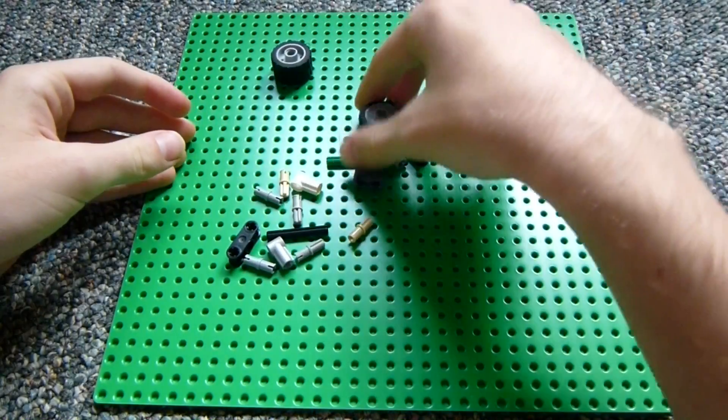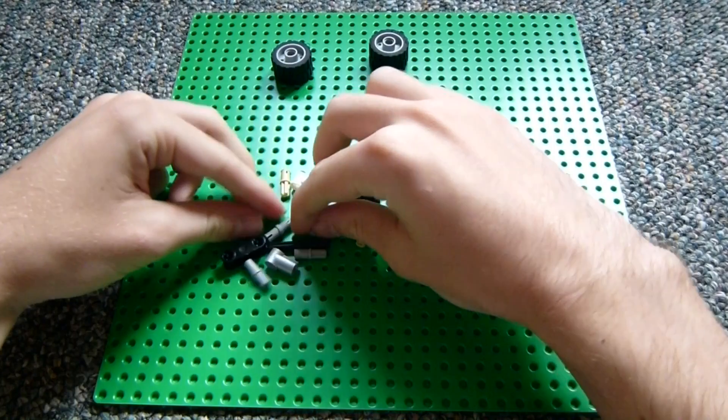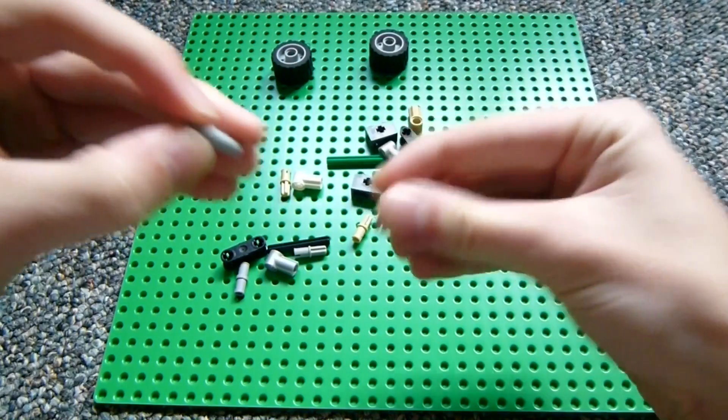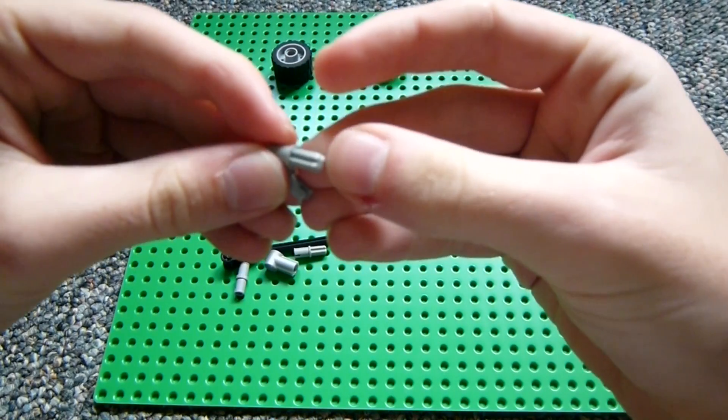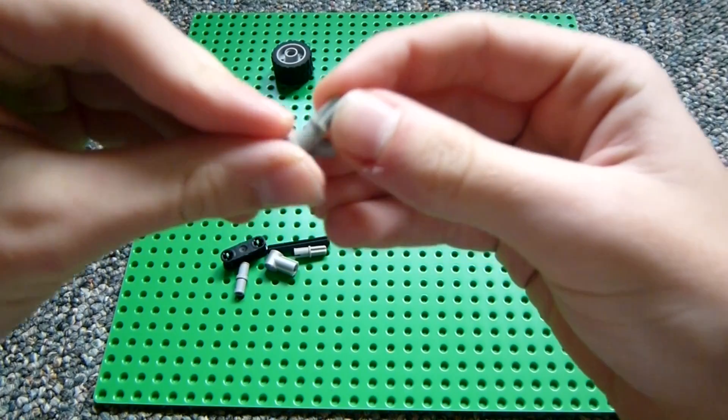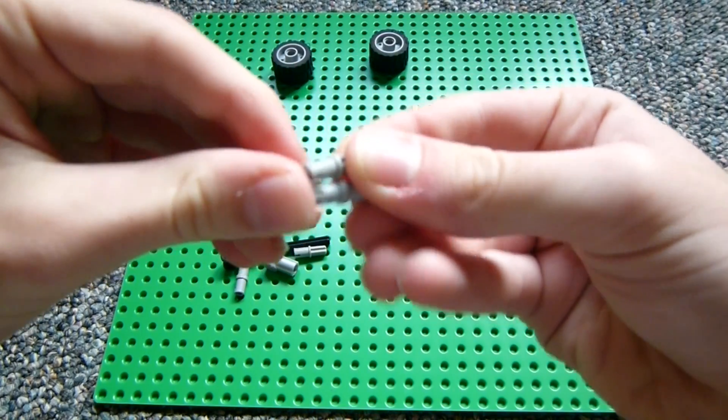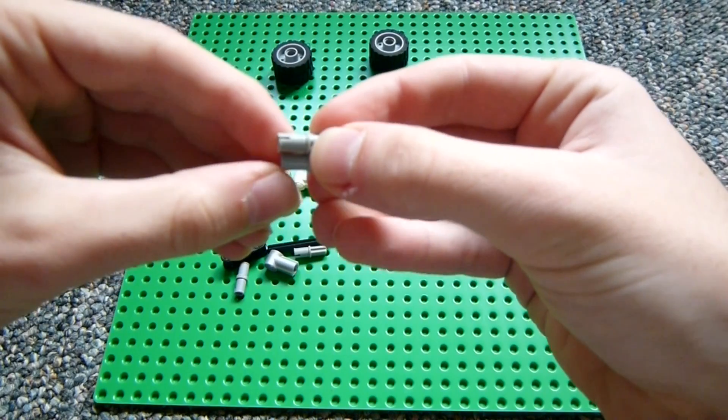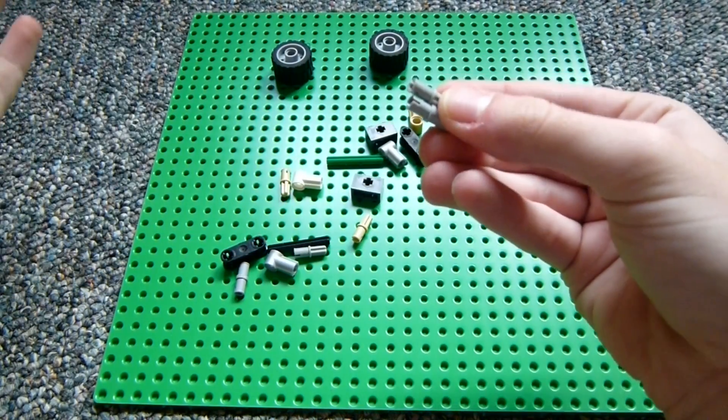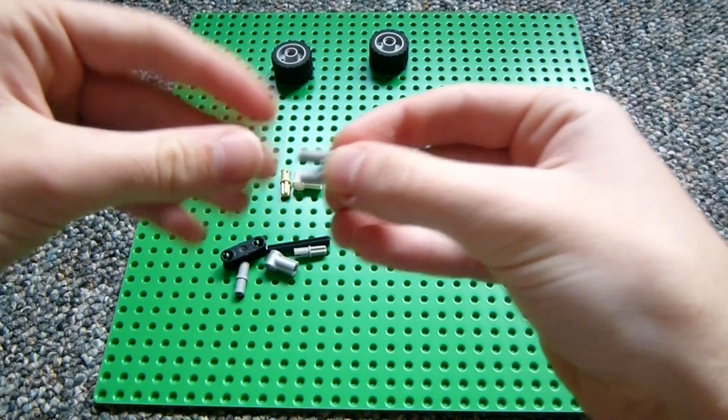Most importantly, you're going to need some Technic pieces. You're going to need some pins and some of these half-pin, half-Technic rod pieces. And you'll want to kind without the ridges in them because this way they don't really have a lot of friction.